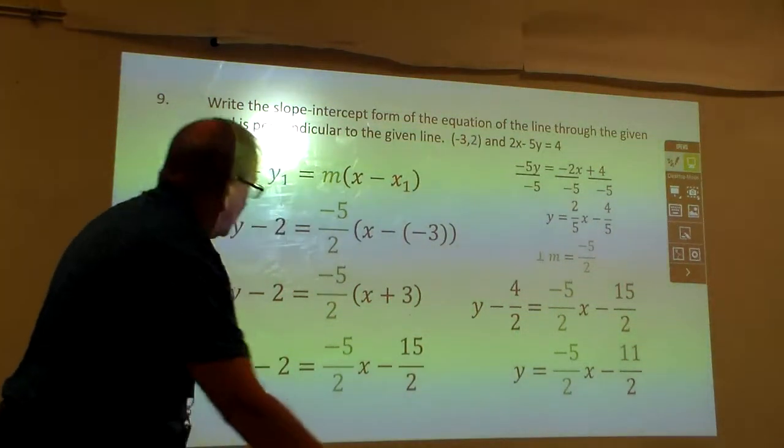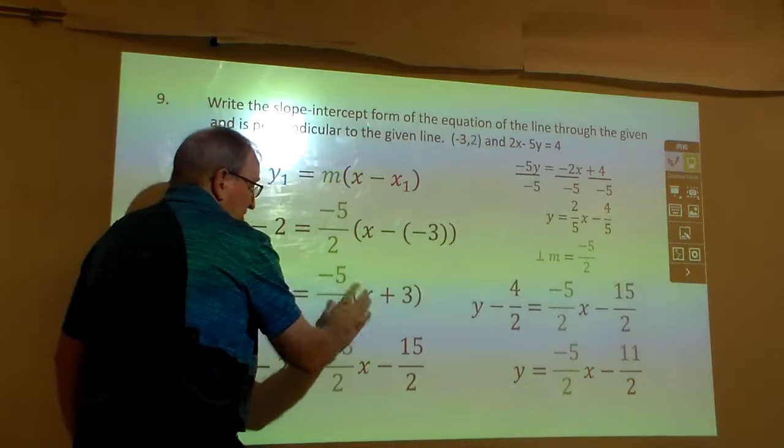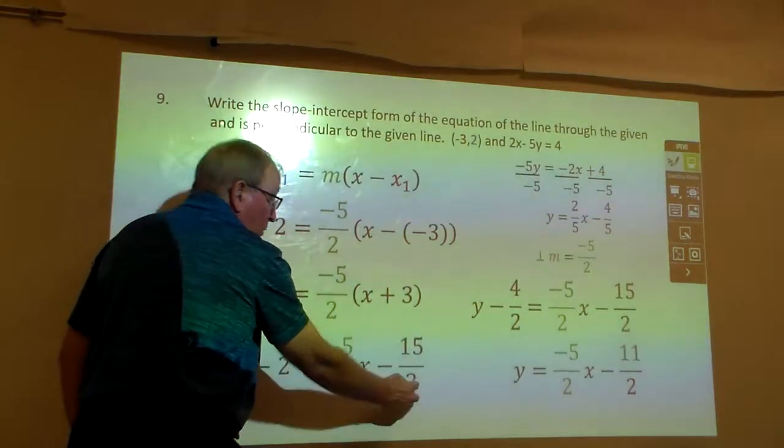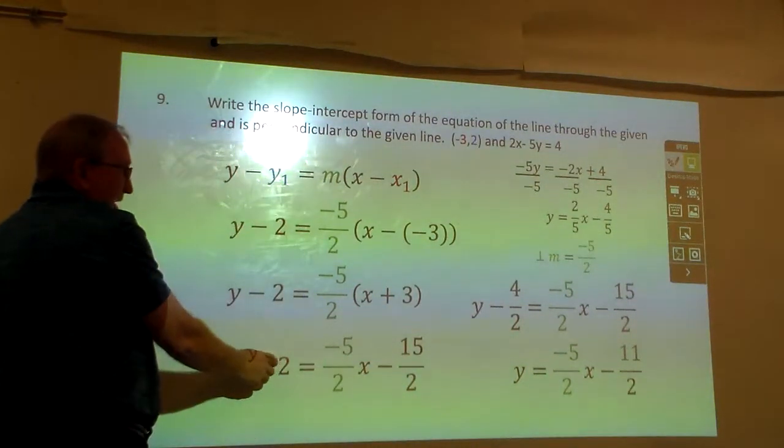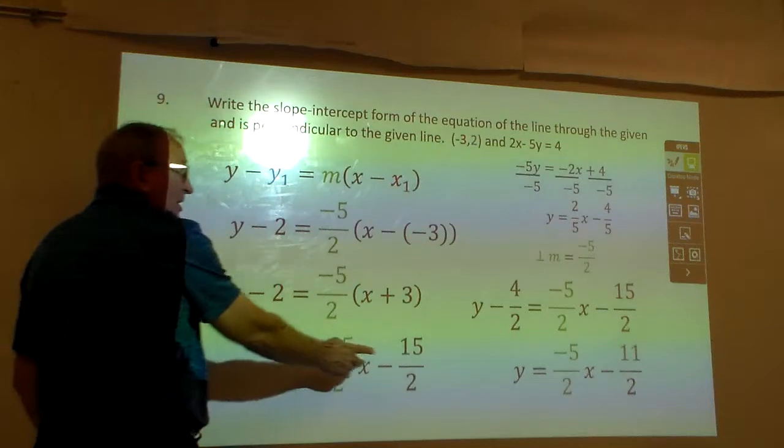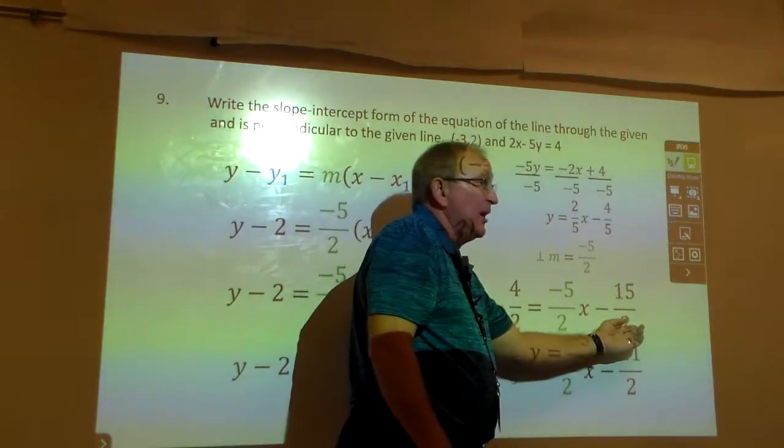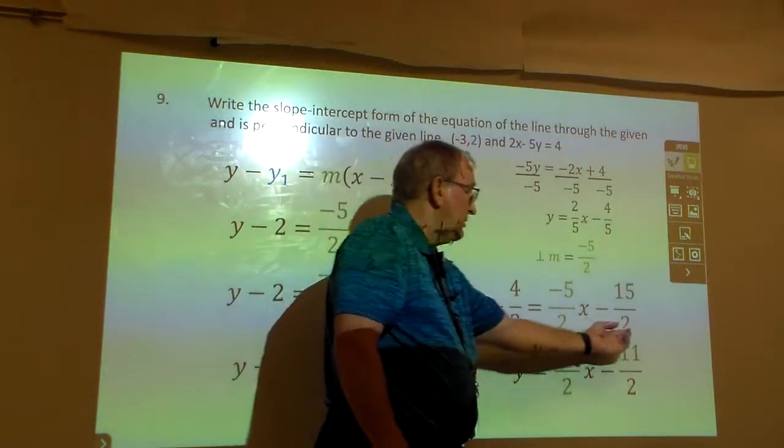And once again, kind of make sure. This times that is 5, negative 5 halves x. Negative 5 times 3 is negative 15, and 2 would be over 1, makes 2. I've got to add 2 to this, but I can't add 2 because they're fractions. I've got to have a common denominator.